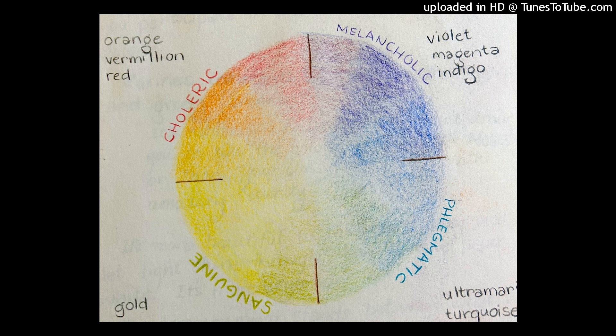The next invisible body is the astral body, which enables us to have feelings and perceptions. The highest super sensible body is the I or ego, our essential self, which enables us to be conscious of ourselves as individual beings among other beings.